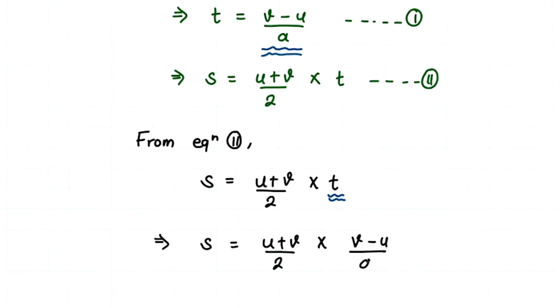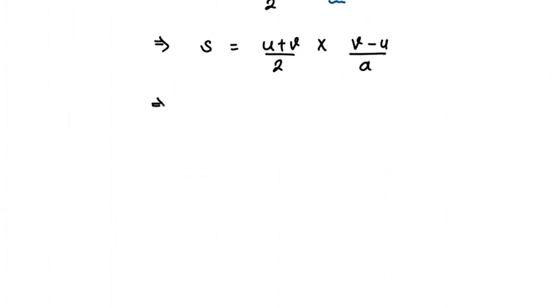So we'll get s equals u plus v divided by 2 times v minus u divided by a. So this is from our first equation. Now we can just solve this and we'll get our answer.